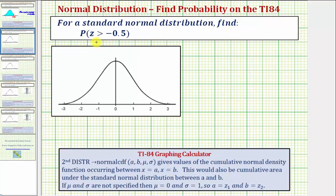Here we're asked to find the probability that z is greater than negative 0.5. Looking at the graph of the standard normal distribution shown here, z equals negative 0.5 would be approximately here.